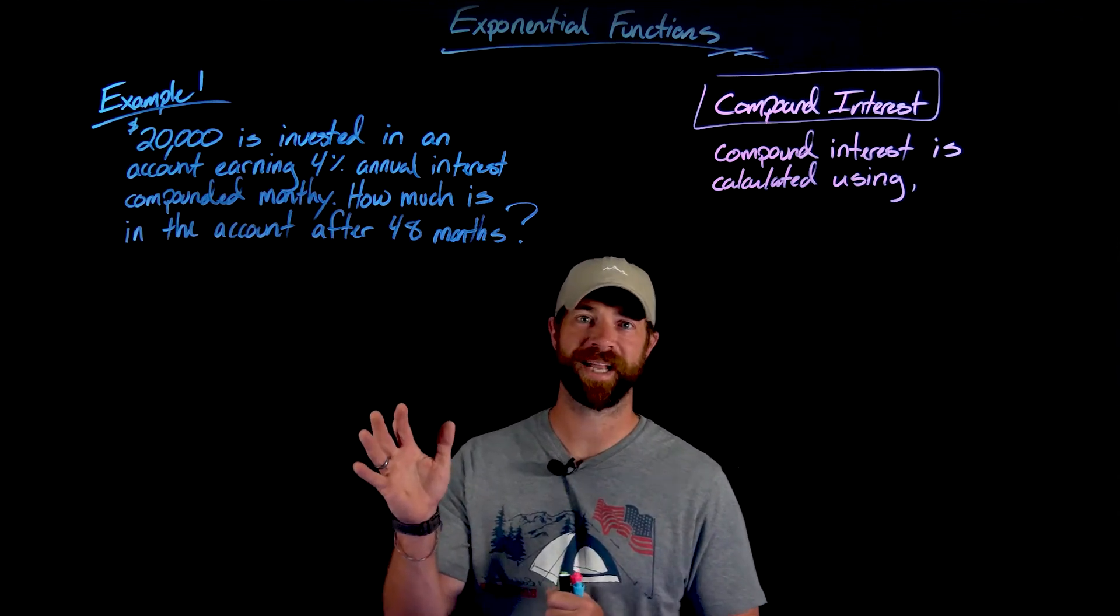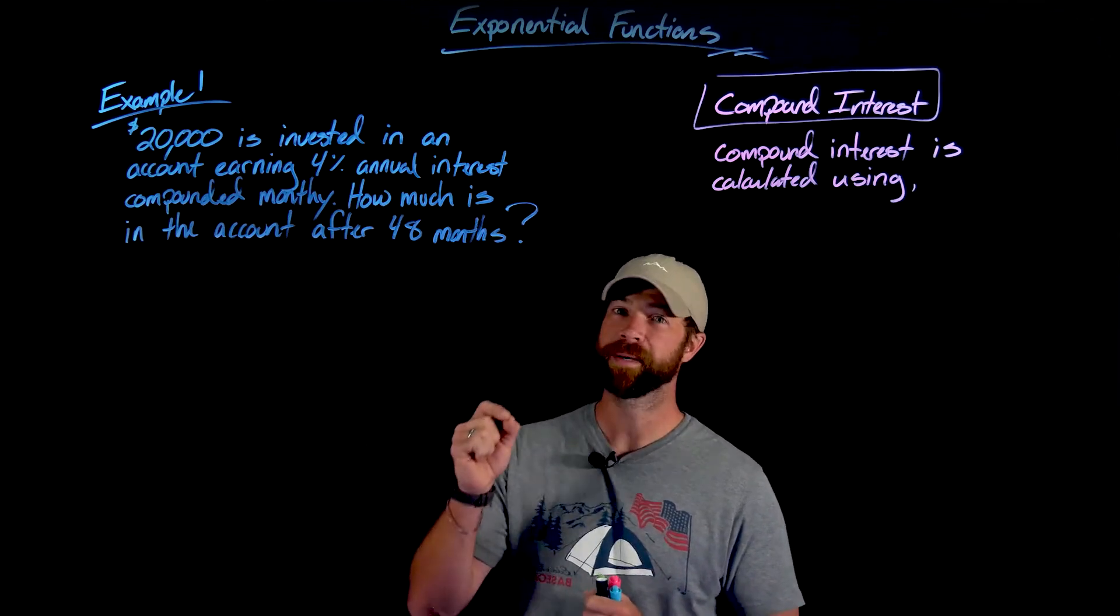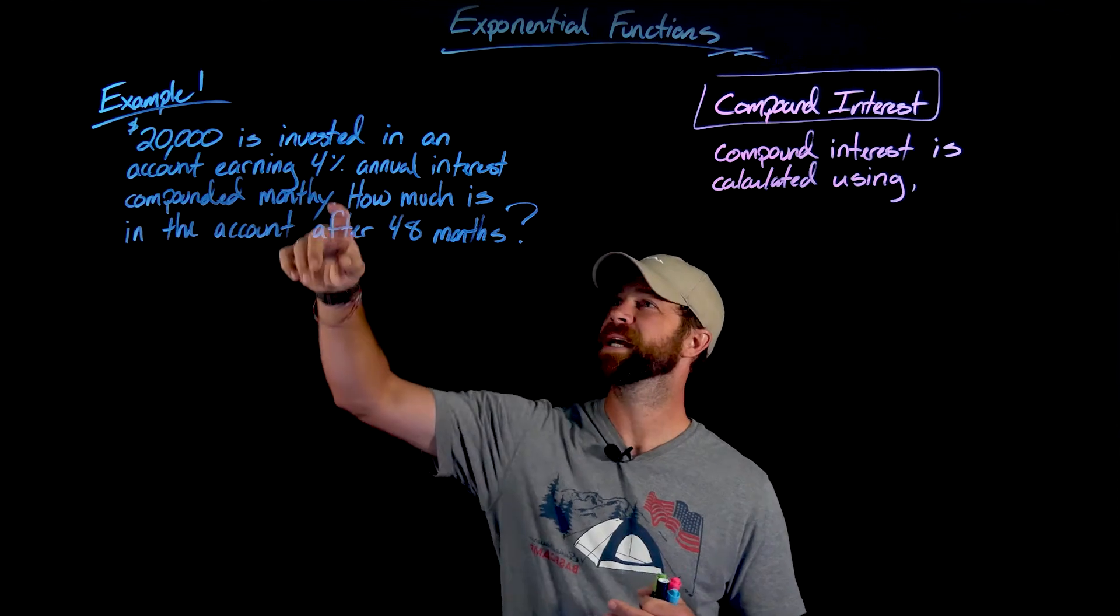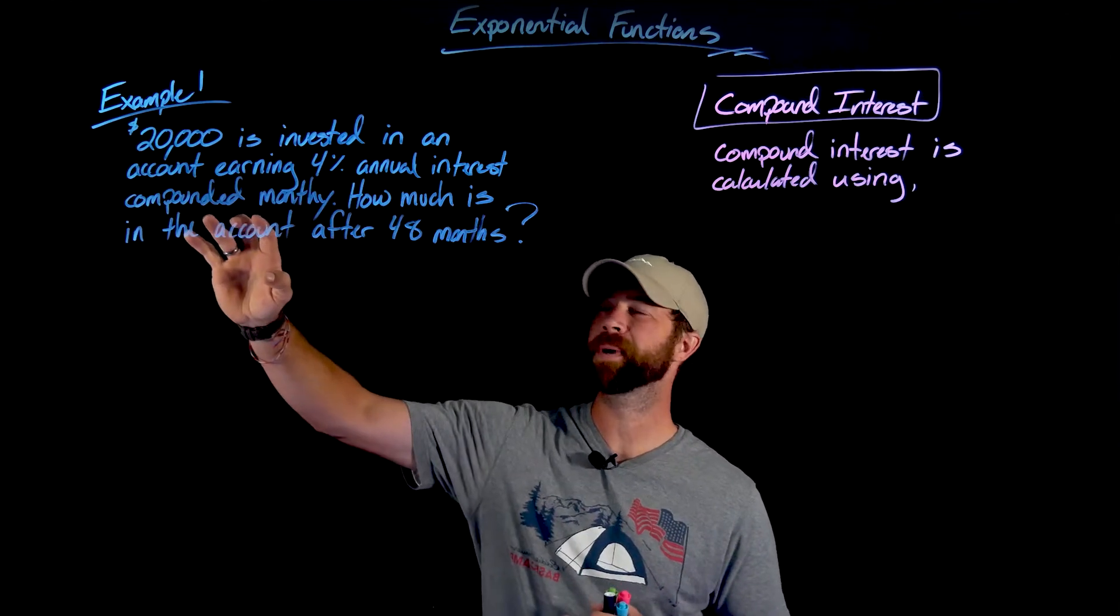The first situation I have here is a really good example of compound interest. Importantly in this case, we have an amount of money that we're putting into an account. It has 4% annual interest or APR, but it's compounded monthly.